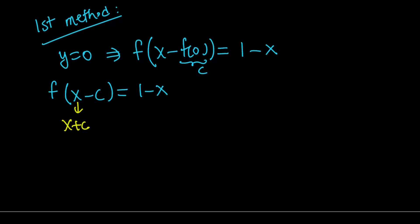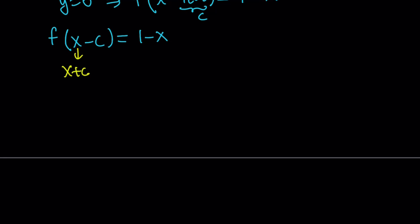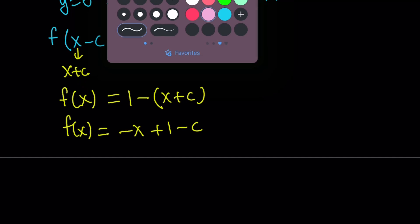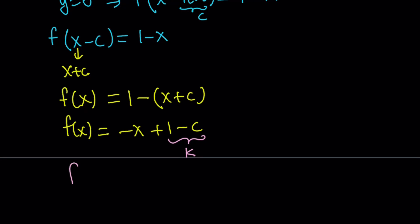By the way you can replace x with pretty much anything. You can replace it with y, 2y, 3z, anything as long as you do it on both sides. So we're going to replace x with x + c. That's going to give us f(x) on the left hand side and on the right hand side we're going to get 1 - (x + c). And if you go ahead and distribute this, this is going to give you -x + 1 - c. Now c is a constant because it's f(0) and 1 - c is also a constant. So if you replace 1 - c with something, how about calling it k? So this gives us f(x) = -x + k where k is a constant.